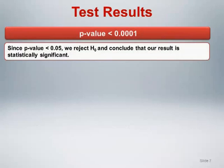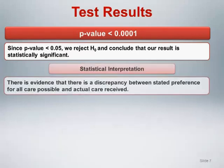The p-value generated by the chi-square goodness of fit test in this example is less than 0.0001. Since the p-value is less than or equal to 0.05, we reject the null hypothesis and conclude that our result is statistically significant. From a statistical perspective, we conclude that there is evidence of a discrepancy between stated preference and actual care received.